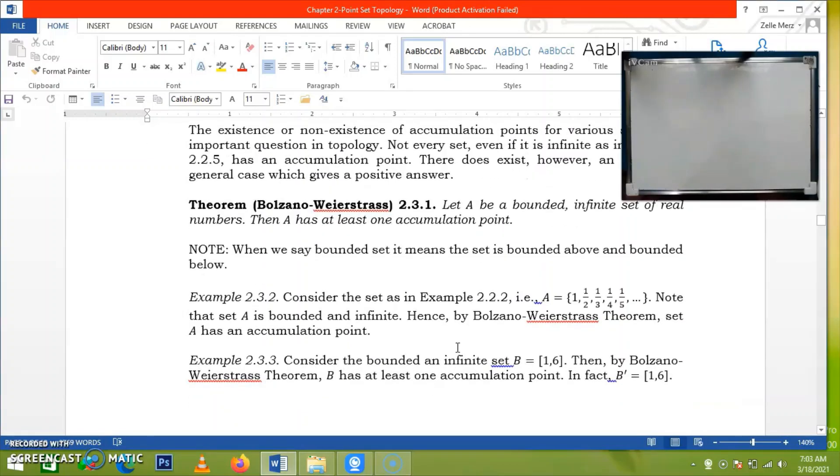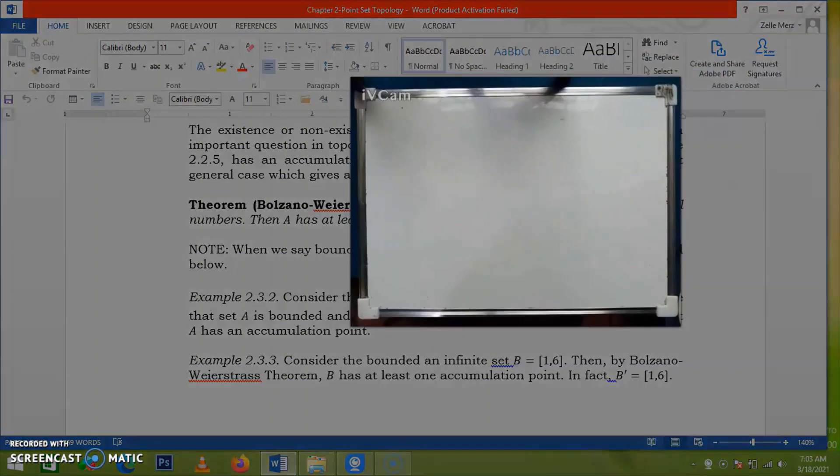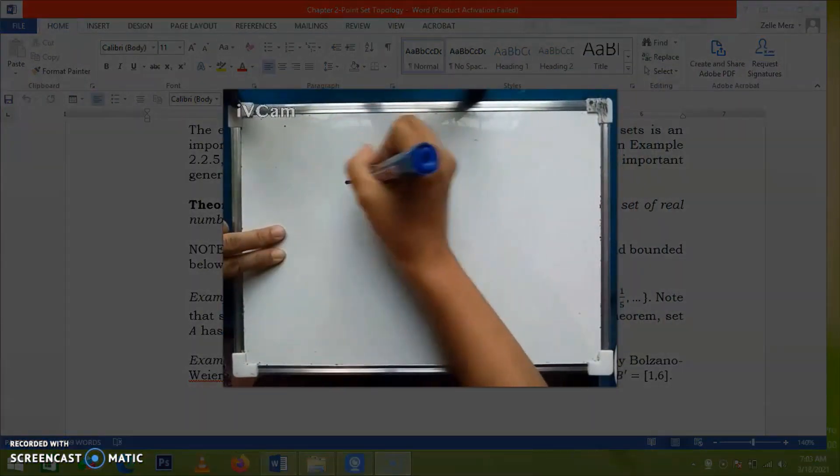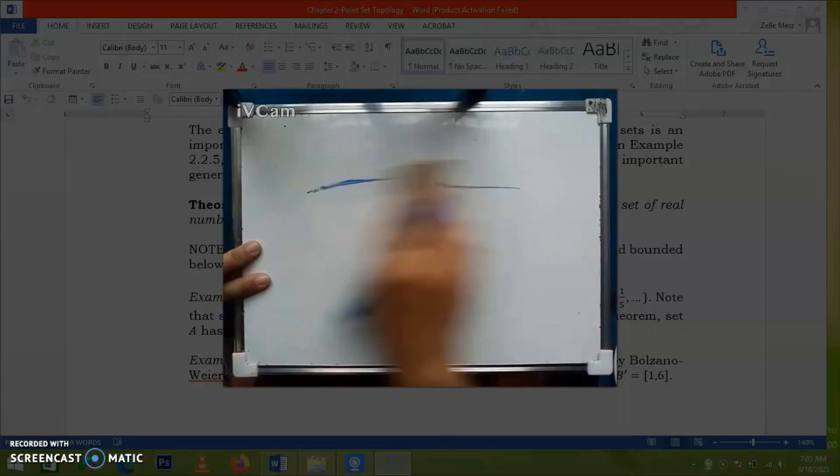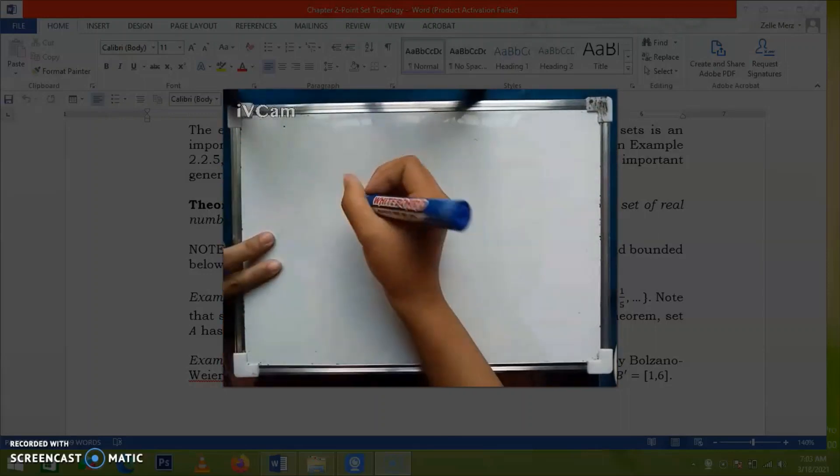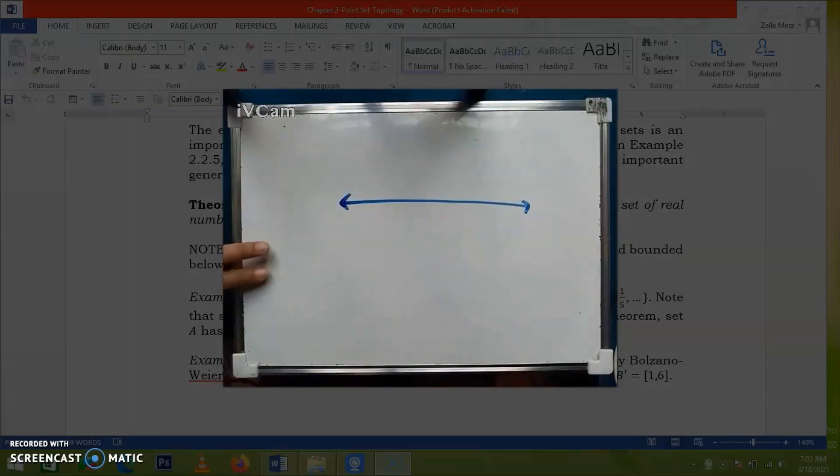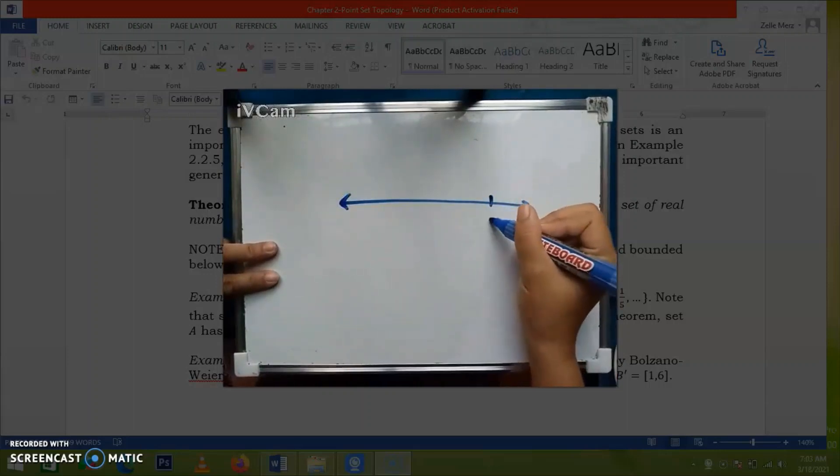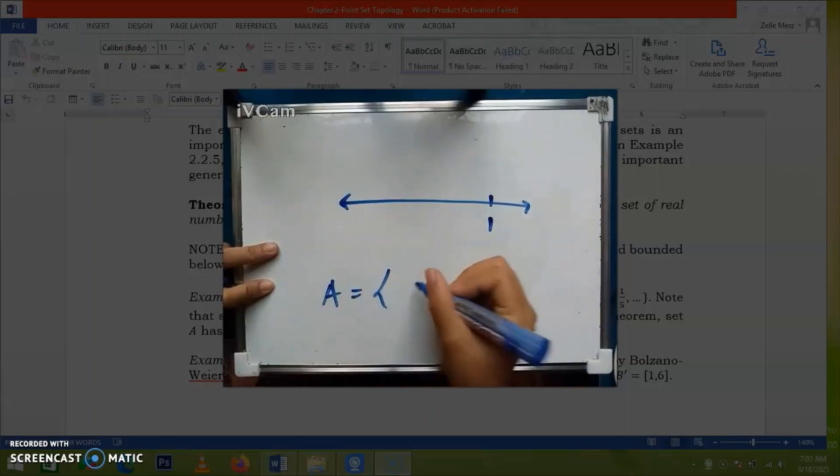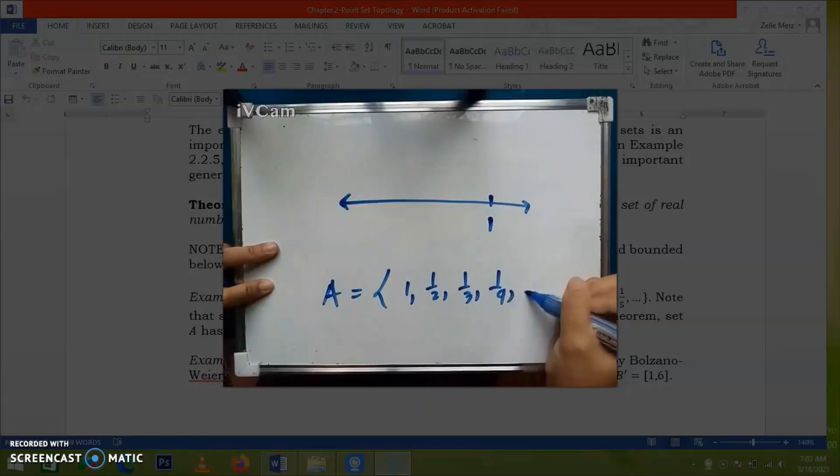In this example, I will let the set be this one. Now, let's have the geometric representation for this set. So, let's have here one. Then, next is note that A is equal to this set: one, one half, one third, one fourth, and so on.